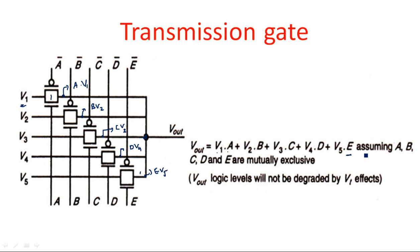Assuming all control inputs A, B, C, D, E are mutually exclusive, the V_out logic levels will not be degraded by any threshold voltage effects — this is the key advantage of transmission gates over pass transistor logic.